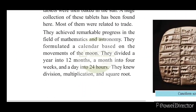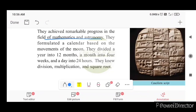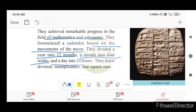The Mesopotamians achieved remarkable progress in the field of mathematics and astronomy. They divided the year into 12 months and the month into 4 weeks. They knew division, multiplication, and square root.